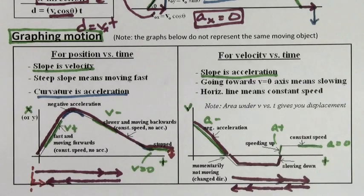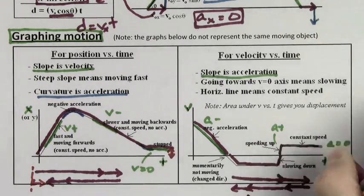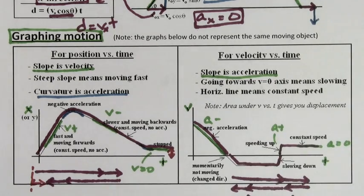Slows down to a stop again, and then speeds up in the positive direction, and then finally maintains a constant positive velocity.